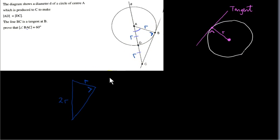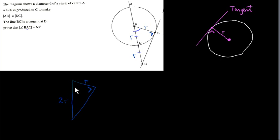So triangle ABC is a right-angle triangle whose hypotenuse is 2R and one of the short sides is R. So we have that the hypotenuse is twice as long as one of the short sides. To bring trigonometry into this, I'm going to call angle BAC angle X — this is the angle we're after. We're trying to prove that X is 60 degrees.